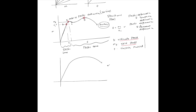To give some ballpark numbers: for aluminum alloy, the elasticity modulus E is close to 70 gigapascals, and for steel E is close to 210 gigapascals. So there is a factor of three between them. What does it mean that the elasticity modulus for steel is three times that of aluminum?